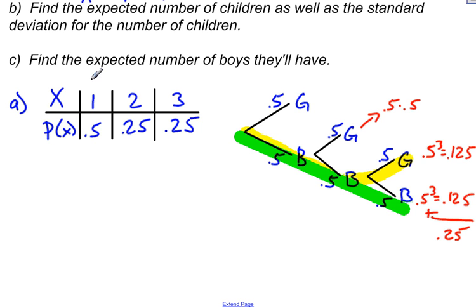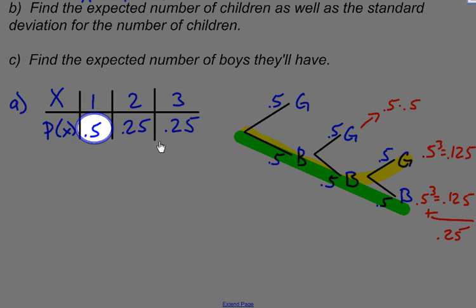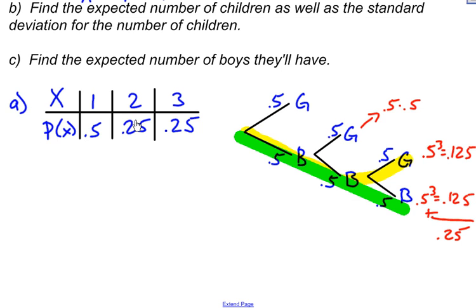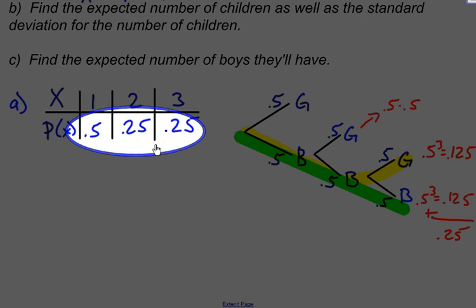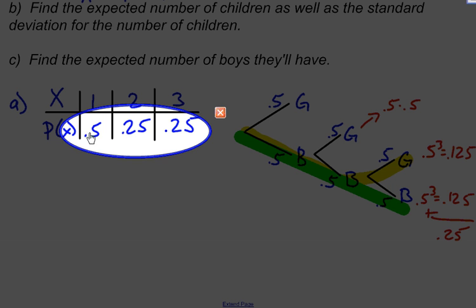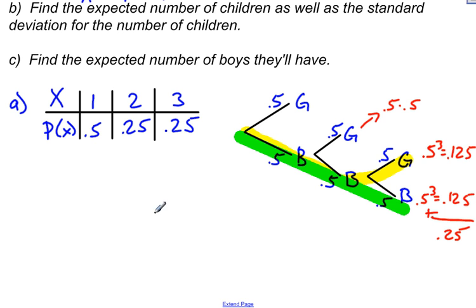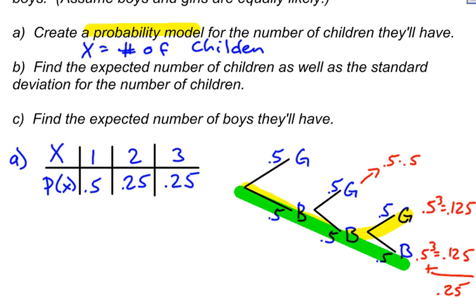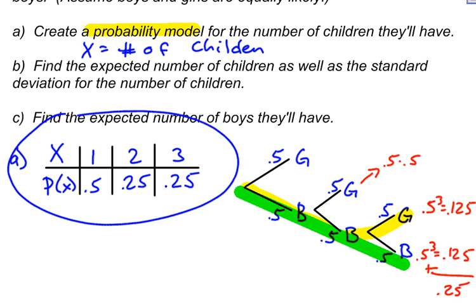This follows the properties of a probability distribution: each individual probability must be between 0 and 1, and the sum of all probabilities should equal 1. So 0.5 plus 0.25 plus 0.25 equals 1 — the probability distribution is in good shape. That completes part A: create a probability model for the number of children they will have.